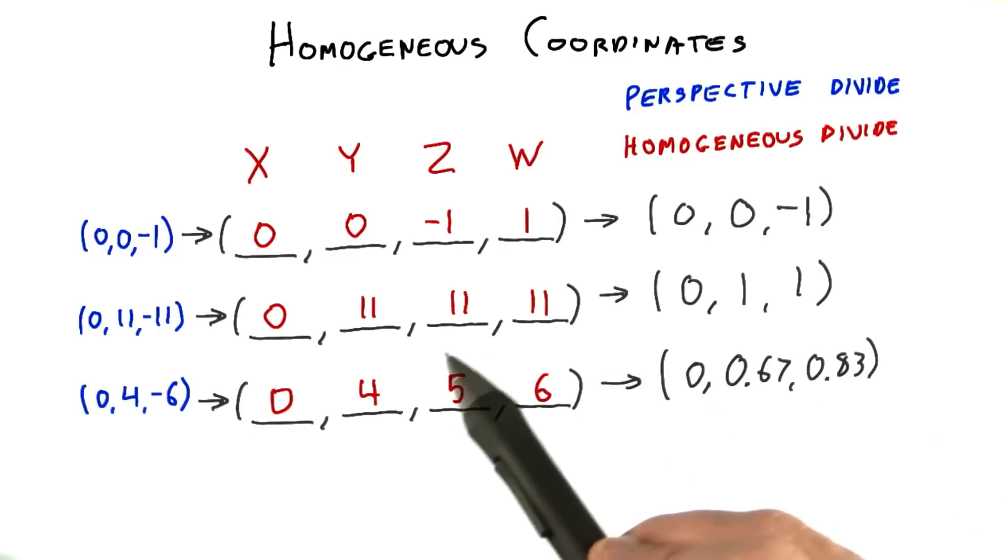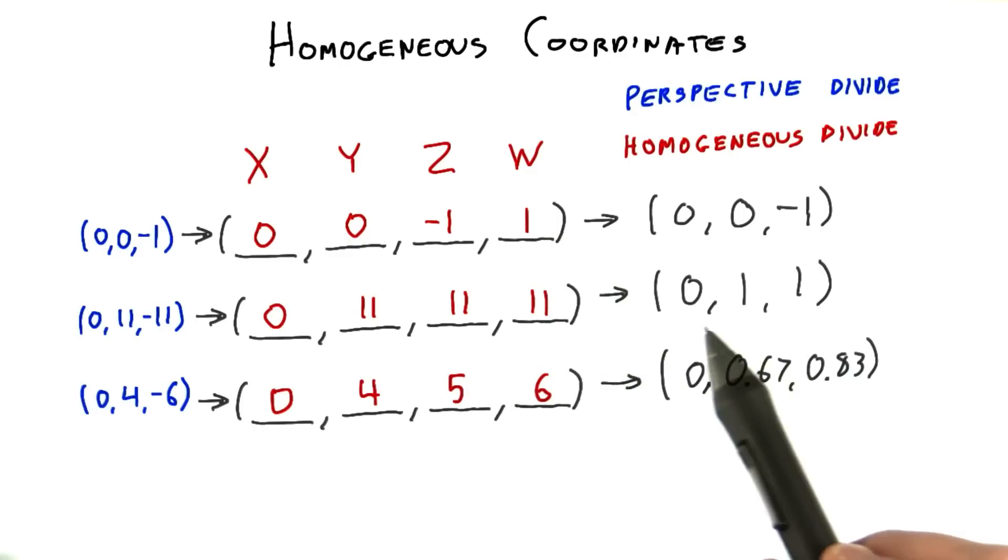For our next point, w is 11. Dividing all these coordinates by 11 gives 0, 1, 1.